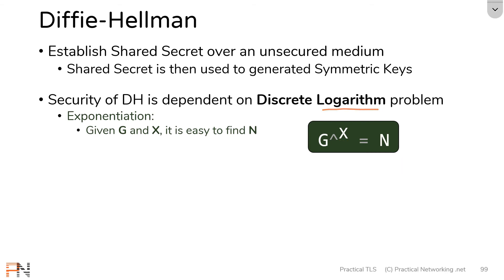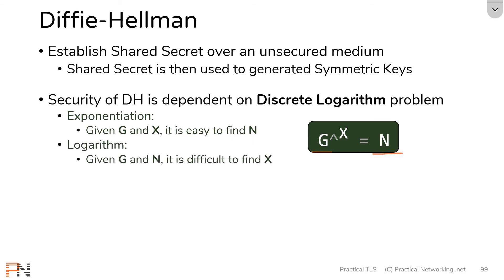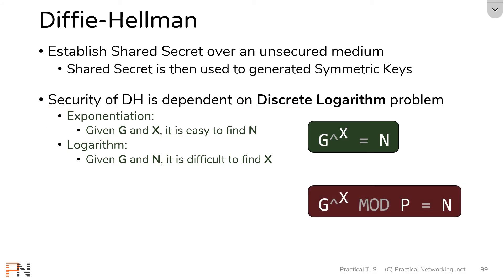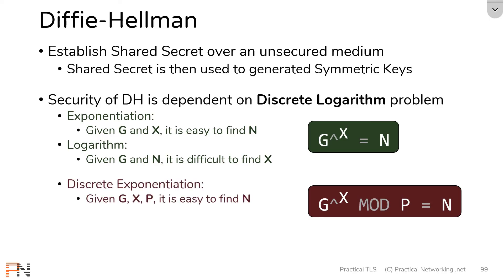A logarithm problem is sort of the opposite: you know g and n and you're trying to solve x. It's like doing an exponentiation backwards. Note that logarithms are difficult — I didn't say impossible. That's where the word discrete comes in. Discrete does both of these things but hides it behind a modulo operation, or remainder operation. Discrete exponentiation means you know g, x, and p and you're trying to solve n, which is pretty easy — we actually did this several times in the math just a moment ago.